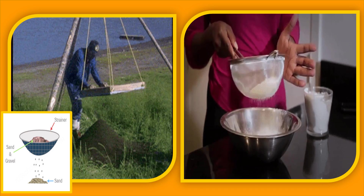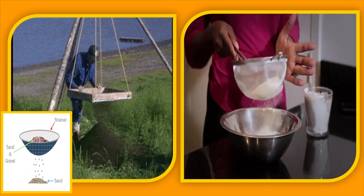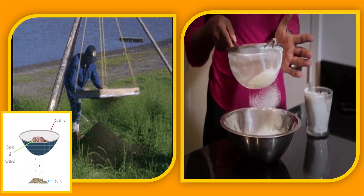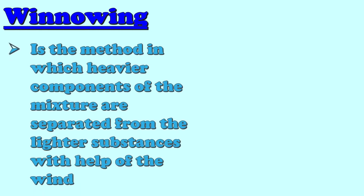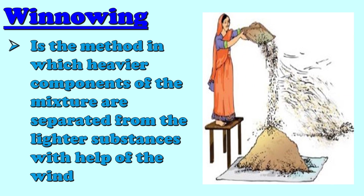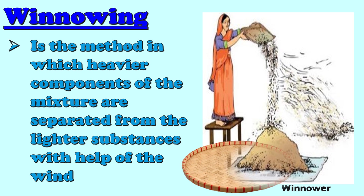Another example is separating large-sized particles of flour using a strainer. We also have winnowing. It is the method in which heavier components of the mixture are separated from the lighter substances with the help of the wind. The instrument used in winnowing is called a winnower.